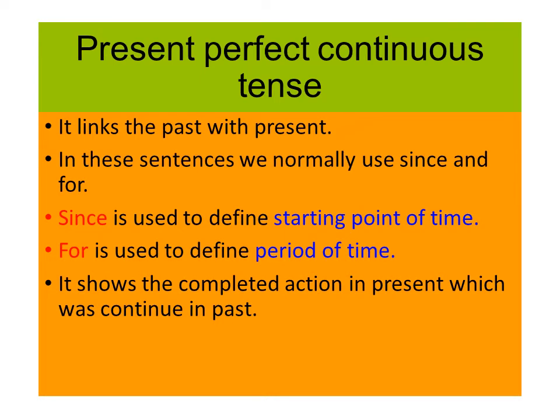Now we will move on to present perfect continuous tense. Present perfect continuous tense links the past with the present — the work we have done in the past is still continuing. We also show for how long we have been doing the action from when it started. It is called present perfect continuous tense because it includes the characteristics of both present perfect tense and present continuous tense.